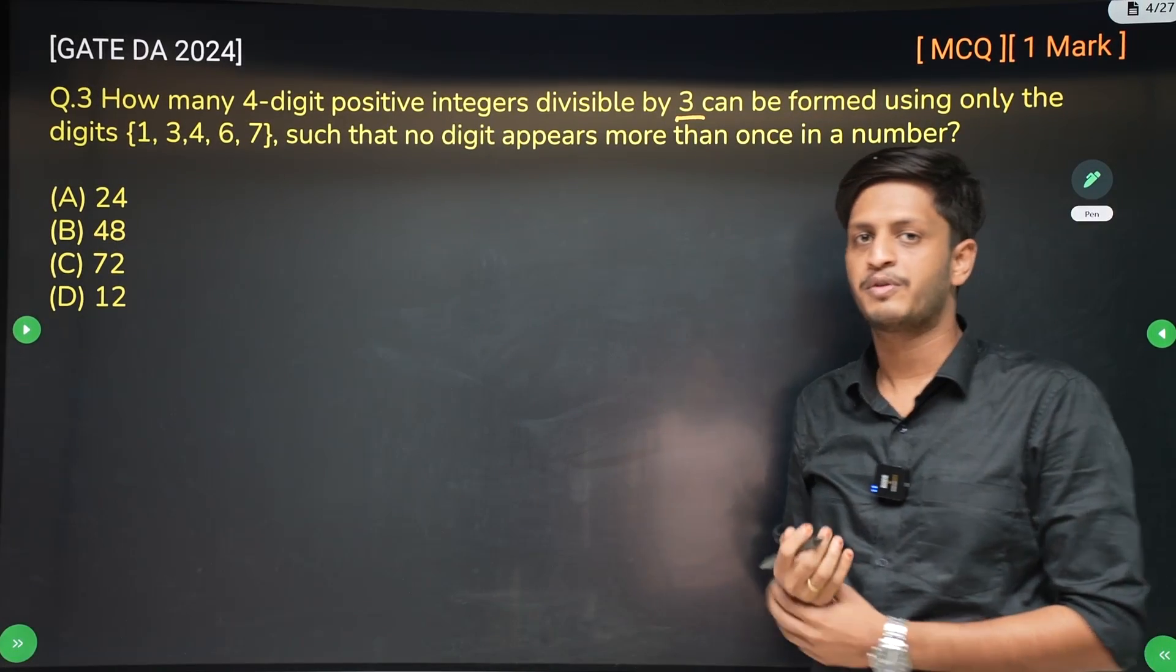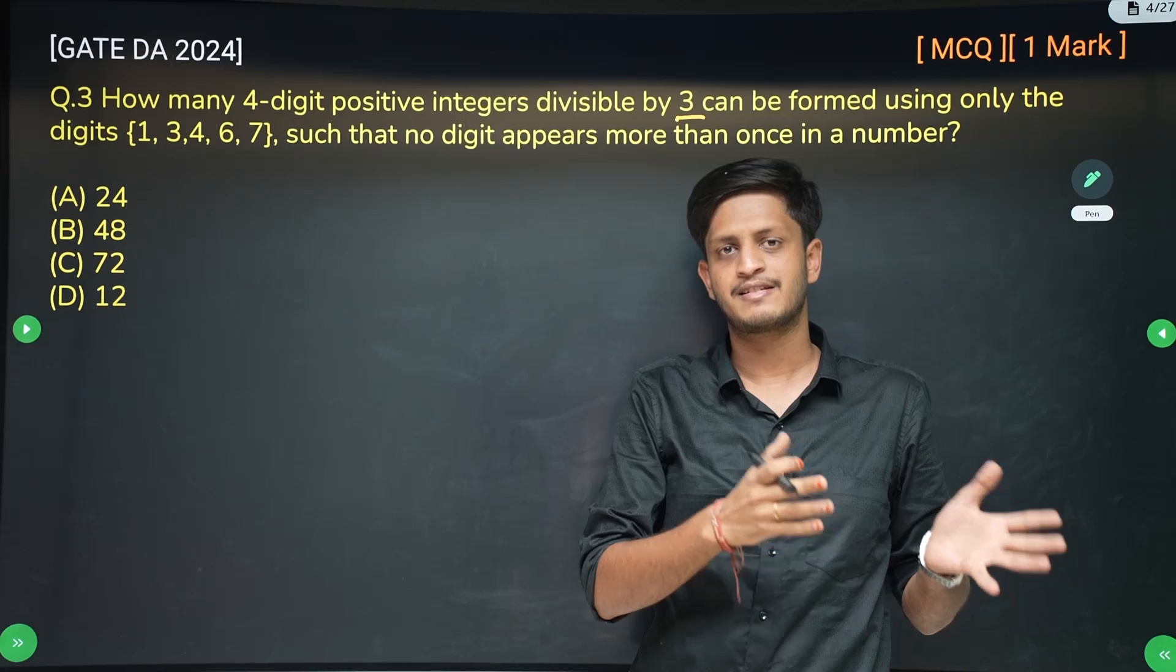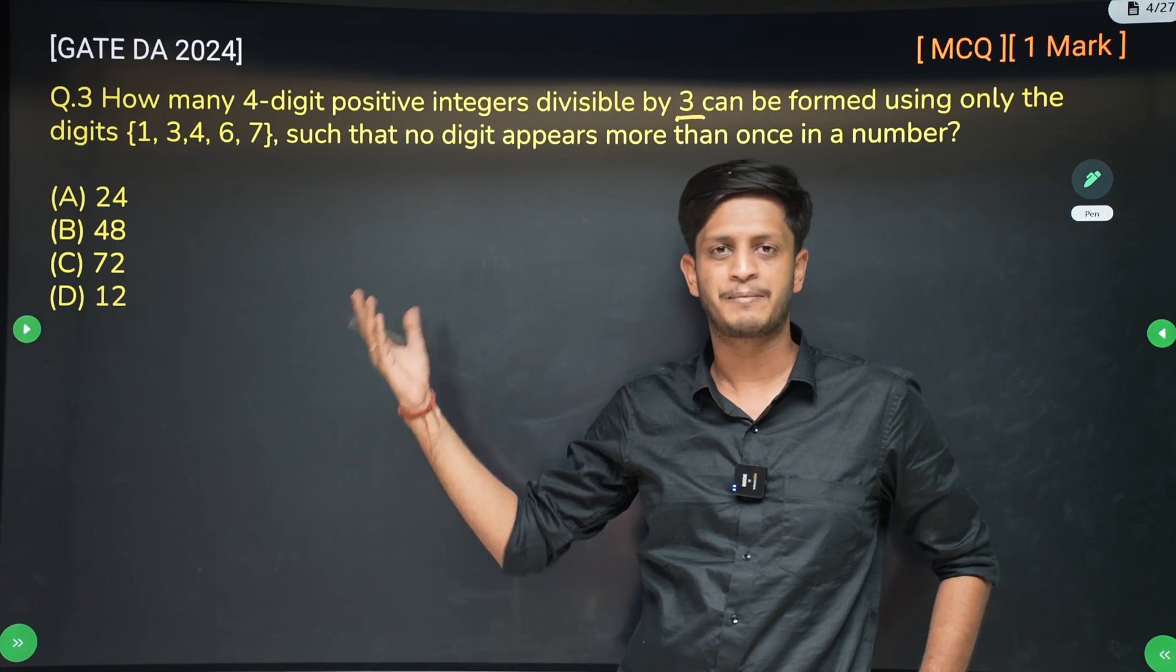Hi, so this is question number 3 from GATE DA 2024. This is a question from counting which we have in probability and statistics syllabus as well. But this question comes under general aptitude.